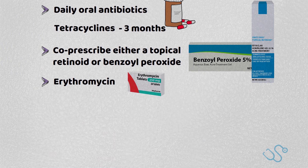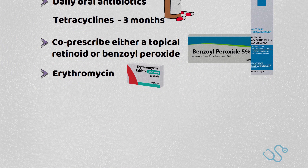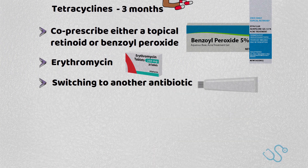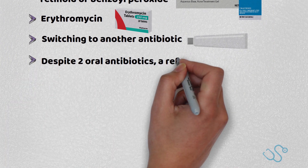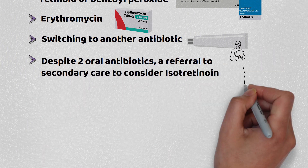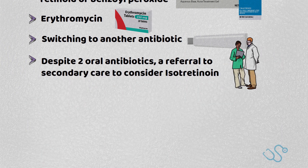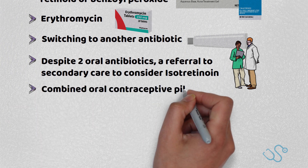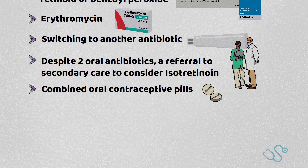Erythromycin can be used in pregnancy if treatment is warranted. If after 3 months there's no improvement, consider switching to another antibiotic. If despite 2 oral antibiotics there's still no improvement, a referral to secondary care should be considered to start isotretinoin. It's also worth noting that there is evidence that the combined oral contraceptive pill alongside topical treatment can be considered in some women, such as Dianette, but the risks and benefits of hormonal treatment need to be discussed.